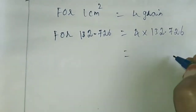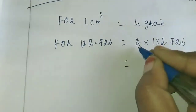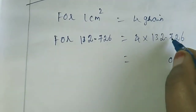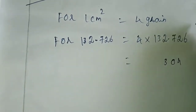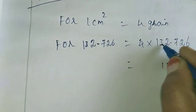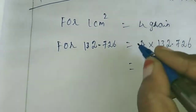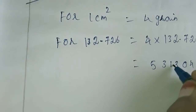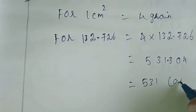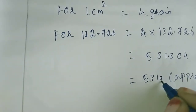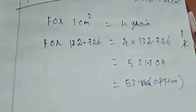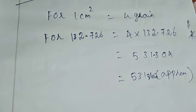I am multiplying directly: 4 into 132.726. After multiplication the answer is approximately 531 grains. So that cone cup has approximately 531 grains in it. That is all for example 6, which is now completed. Now we will move to the exercise sums.